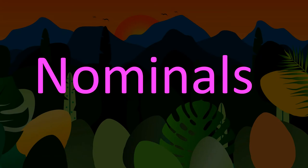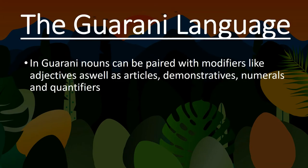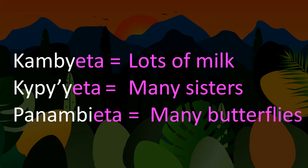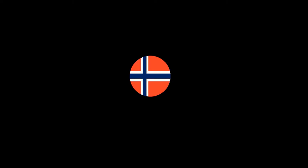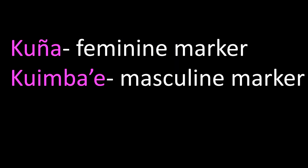Now let's look at nominals. In Guarani, nouns can be paired with adjectives, articles, demonstratives, numerals, and a whole host of other modifiers. For example, the suffix -eta pluralises the noun. However, unlike roughly a quarter of the world's languages, Guarani doesn't use grammatical gender. Instead, it uses markers to distinguish between genders, like in these examples.